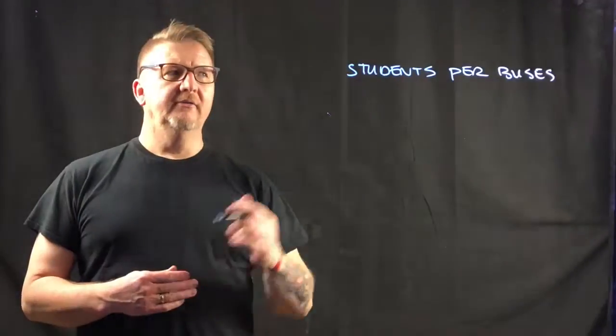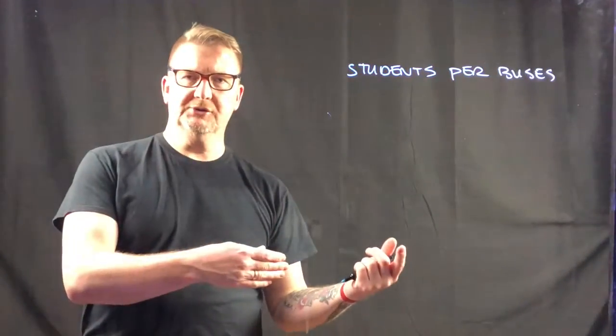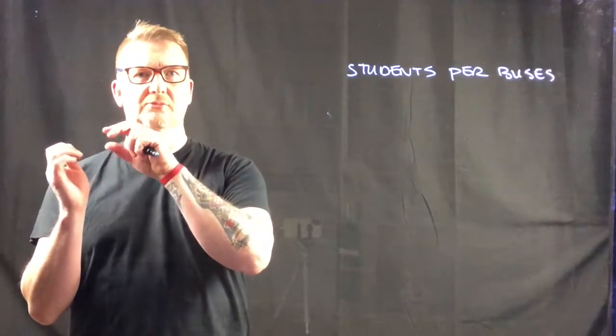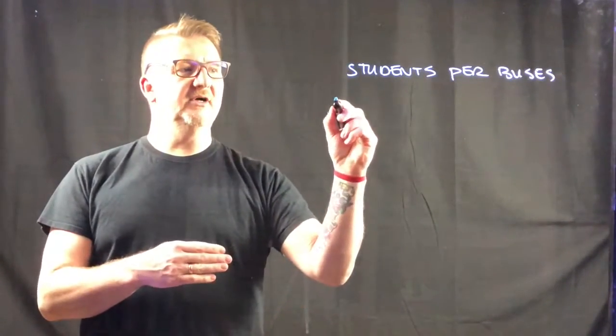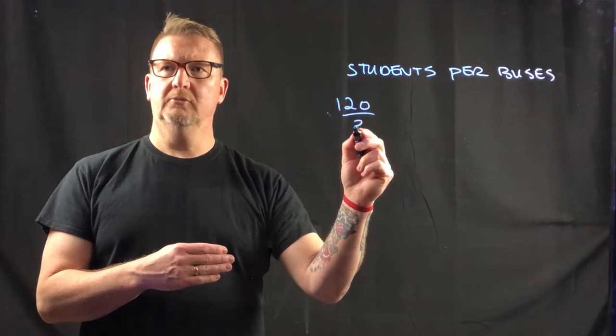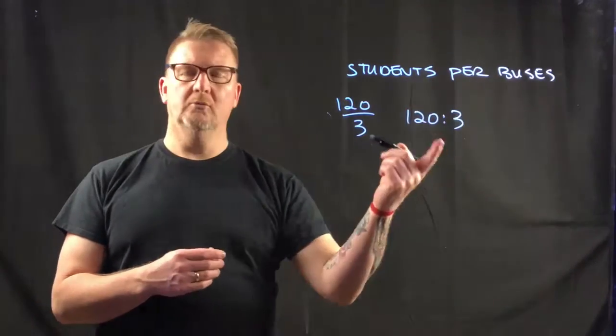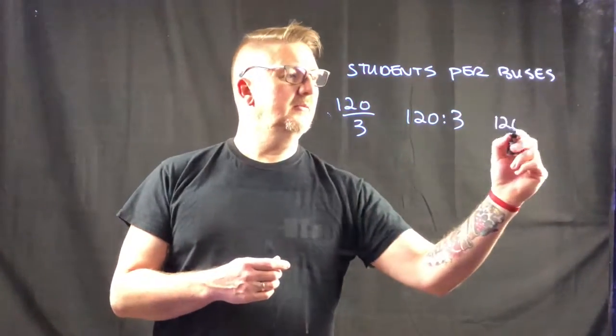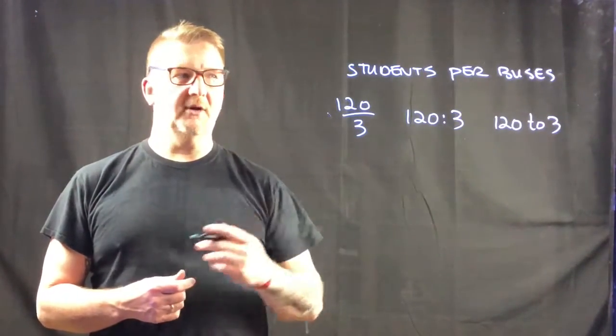We have students. This is the preferred way to write this. I don't want to write it buses per students. I want to write it students per bus. So we have 120 students for three school buses. We can write it as a fraction. We can write it using the colon. Or we can write it just like we say it: 120 to three.